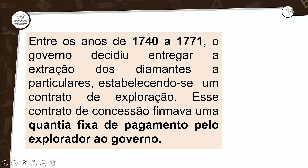Entre os anos de 1740 a 1771, o governo decidiu entregar a extração dos diamantes a particulares, estabelecendo um contrato de exploração. Esse contrato firmava uma quantia fixa de pagamento pelo explorador ao governo. Nessa época era muito comum a questão do 20%, que era de um quinto — ou seja, de tudo aquilo que você arrecada, um quinto você deve passar ao governo.